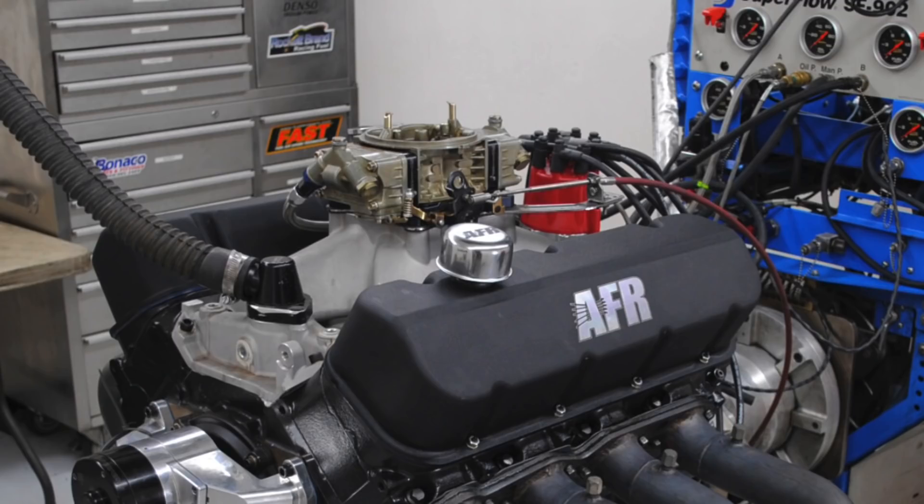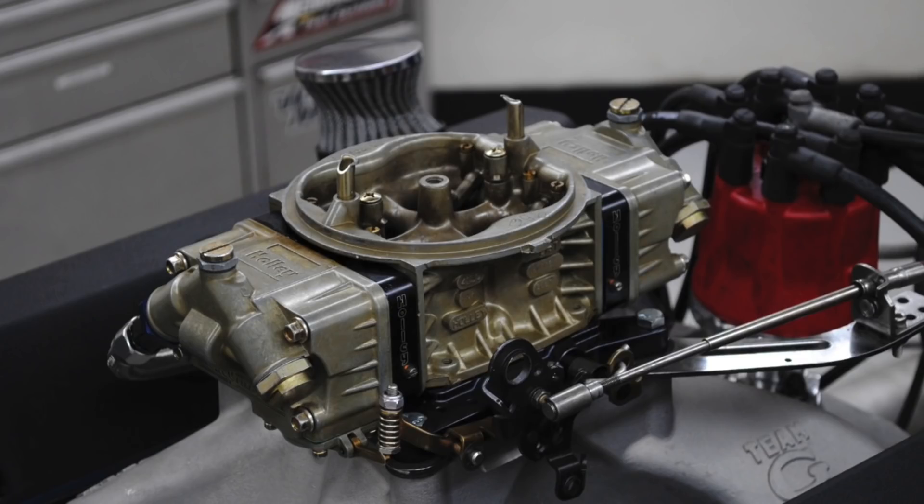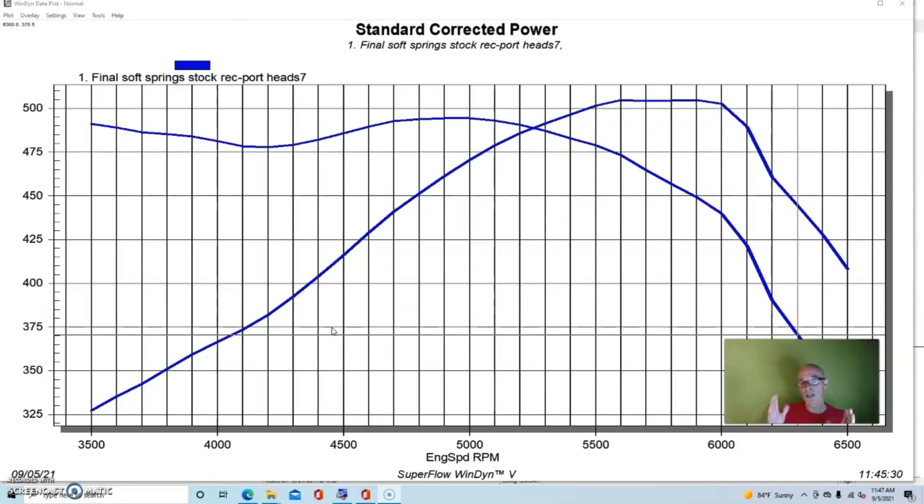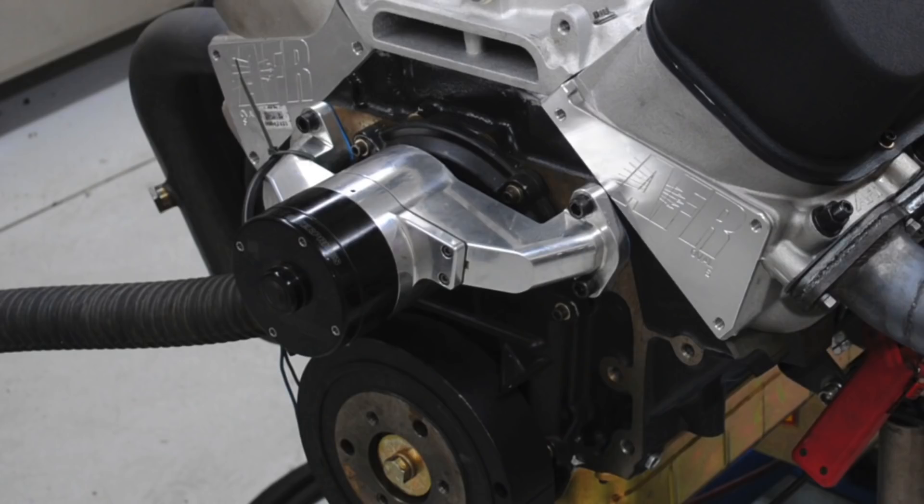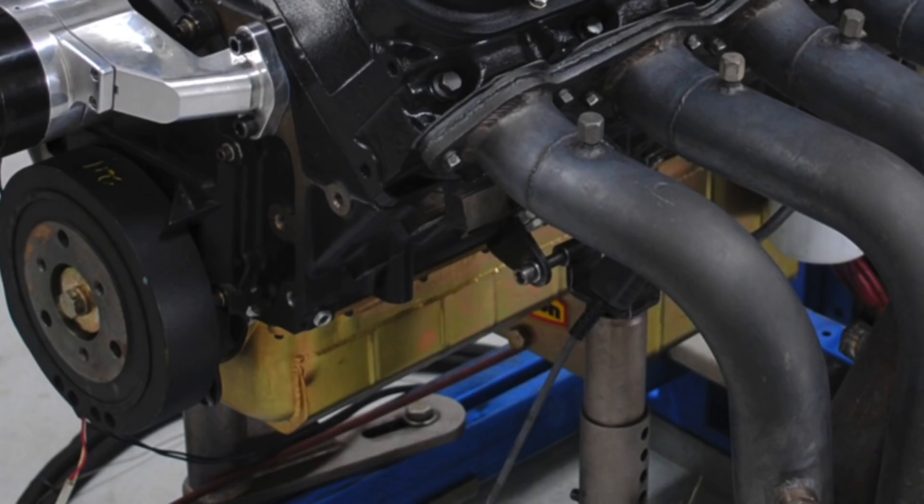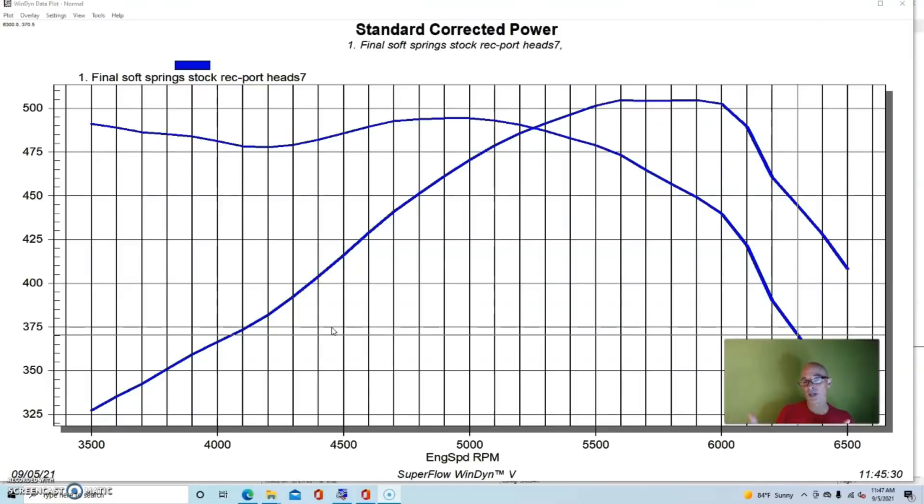The combination was topped off with a Weiand Team G single plane rec port intake manifold and a 950 Holley HP carburetor, more than enough carburetion for this power output. The compression on this combination with the small dome piston and 119cc head on the 088 rec port heads was 9.7 to 9.8:1, a good street compression with an iron head. We ran this combination with our 2.25 inch long tube dyno headers, a Meziere electric water pump, MSD distributor, and I think this was a Milodon oil pan.